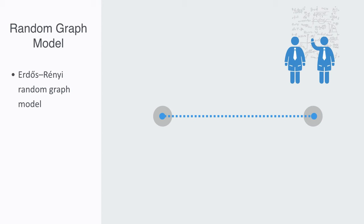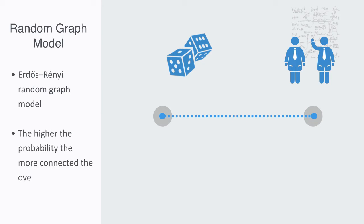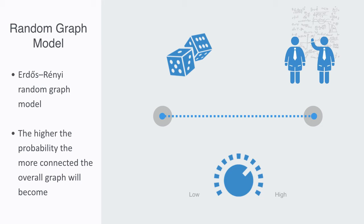So we just take two nodes in the network and we roll a dice to see if there will be a connection between them or not. The higher we set our probability, the more likely there will be a connection, and thus the more connected our overall graph will be. This is a simple system: once you have decided how many nodes there will be, it is then really just defined by a single parameter — the probability parameter for the likelihood that any two nodes will form a connection.